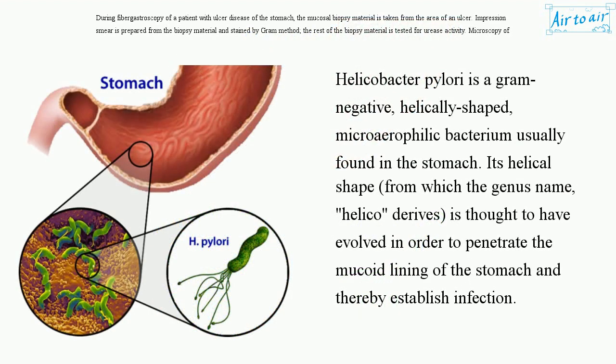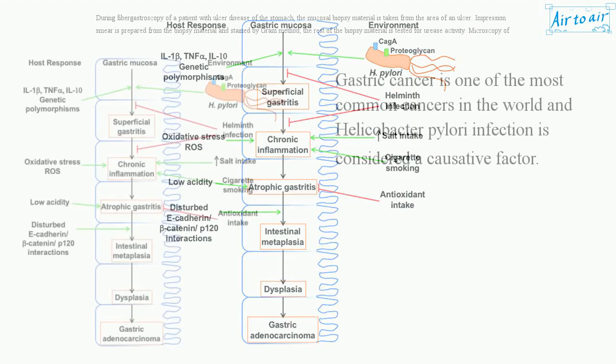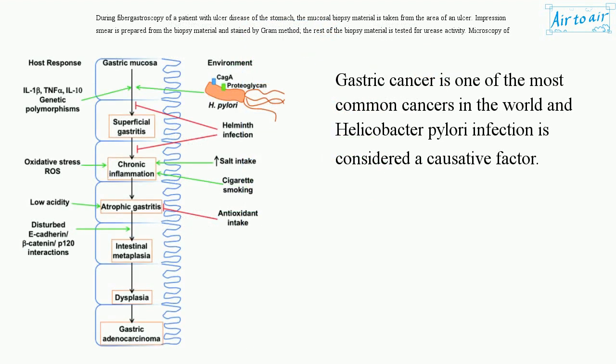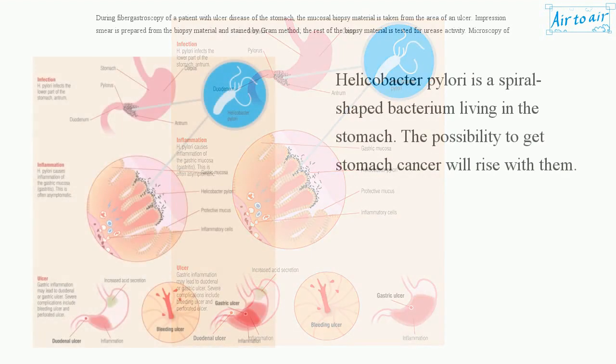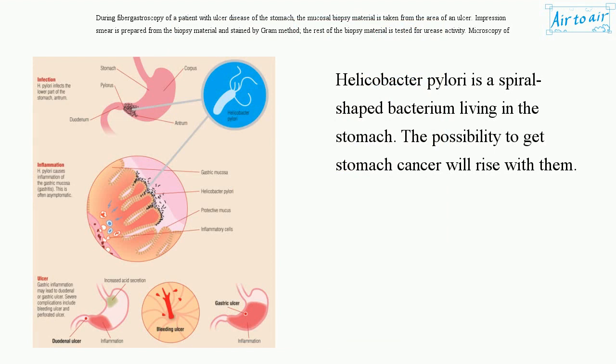Helicobacter pylori is a gram-negative, helically-shaped, microaerophilic bacterium usually found in the stomach. Its helical shape, from which the genus name 'helico' derives, is thought to have evolved in order to penetrate the mucoid lining of the stomach and thereby establish infection. Gastric cancer is one of the most common cancers in the world and Helicobacter pylori infection is considered a causative factor. Helicobacter pylori is a spiral-shaped bacterium living in the stomach, and the possibility of getting stomach cancer will rise with it.